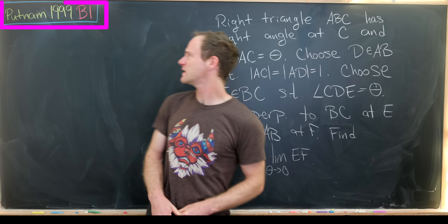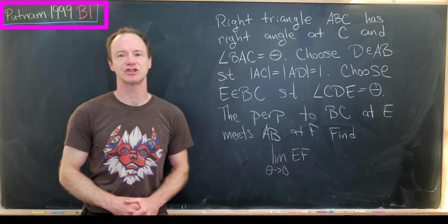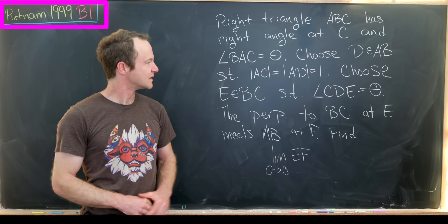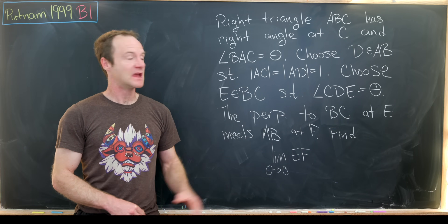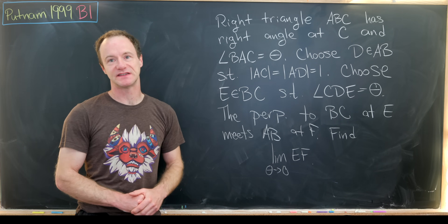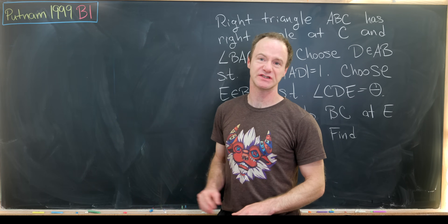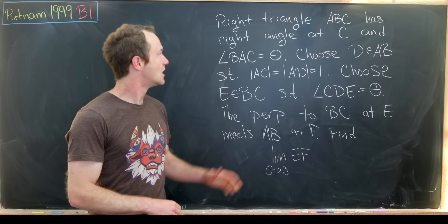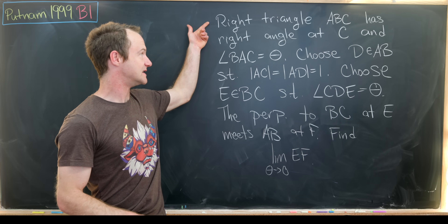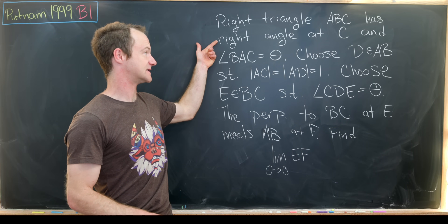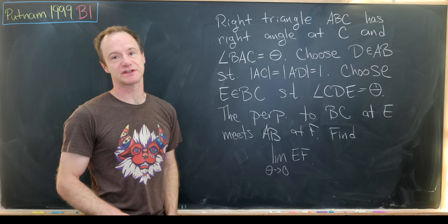Here we have a nice geometry problem from the 1999 Putnam exam, question B1. The question is written over here as given on the exam, and as we read through the sentences, we'll draw a picture and be left with just a picture to work from. Right triangle ABC has a right angle at C, and angle BAC is equal to theta.